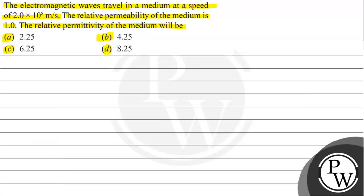To understand this question, we can use the concept of speed of electromagnetic wave. The formula we write is C equals 1 upon under root of μ₀ε₀. This speed of light is in vacuum. If we talk about a medium, we can use this expression with μ_R into ε_R.